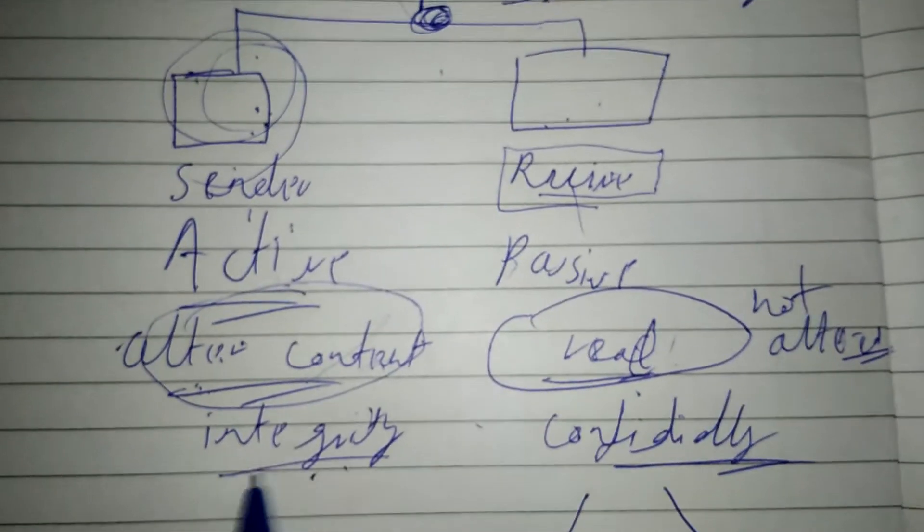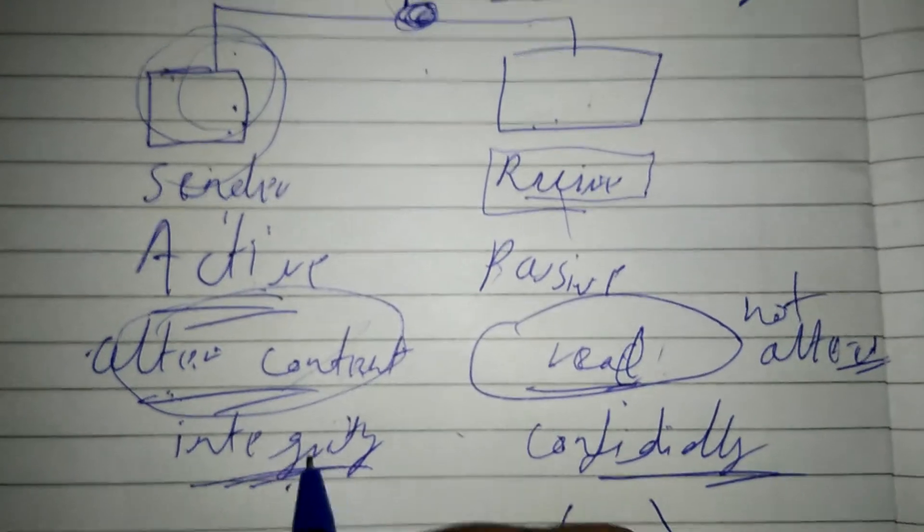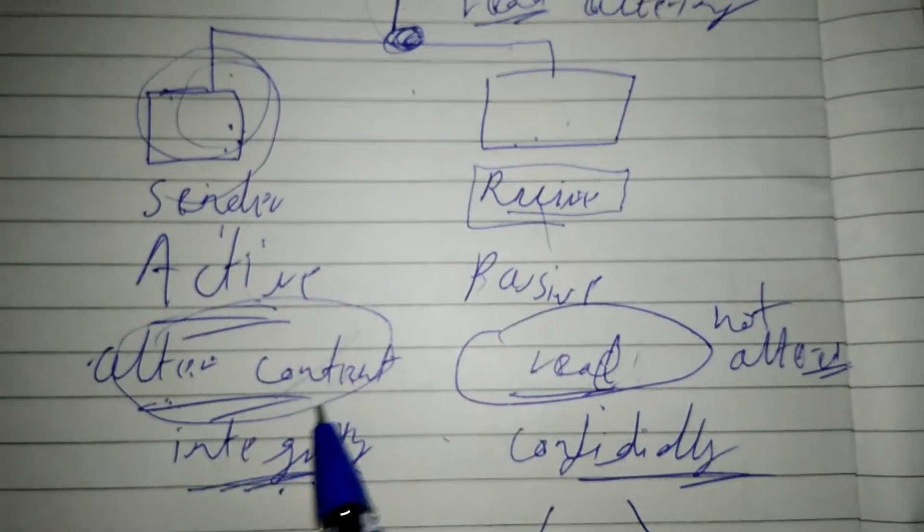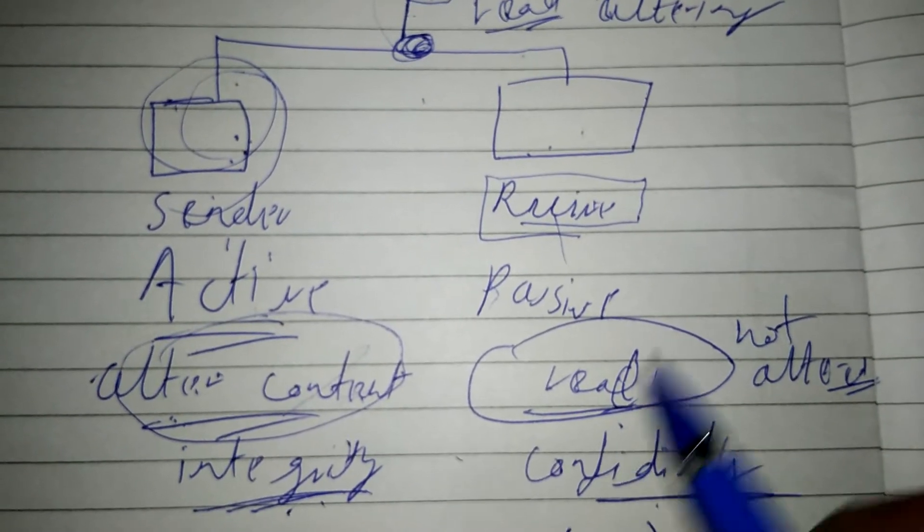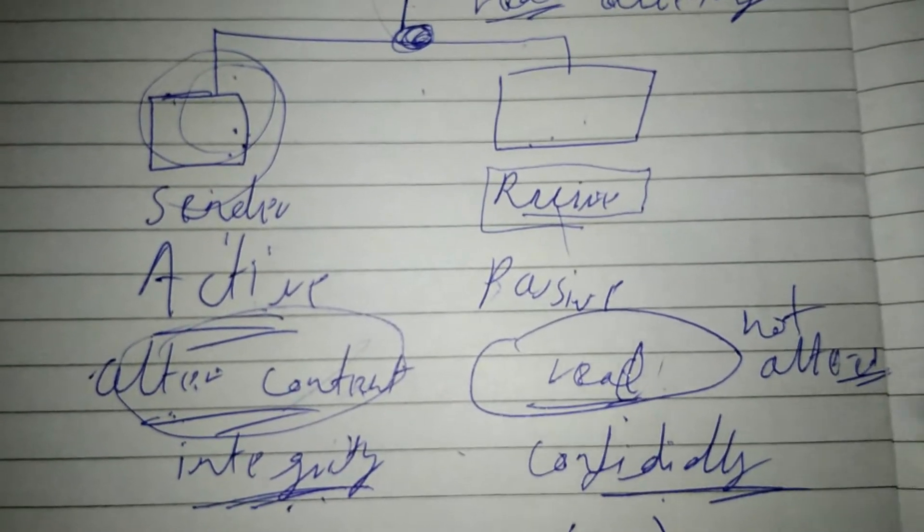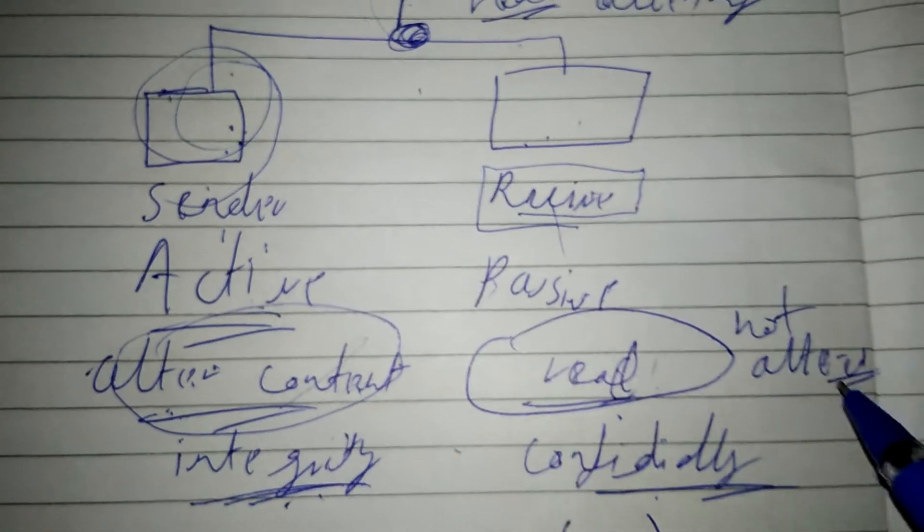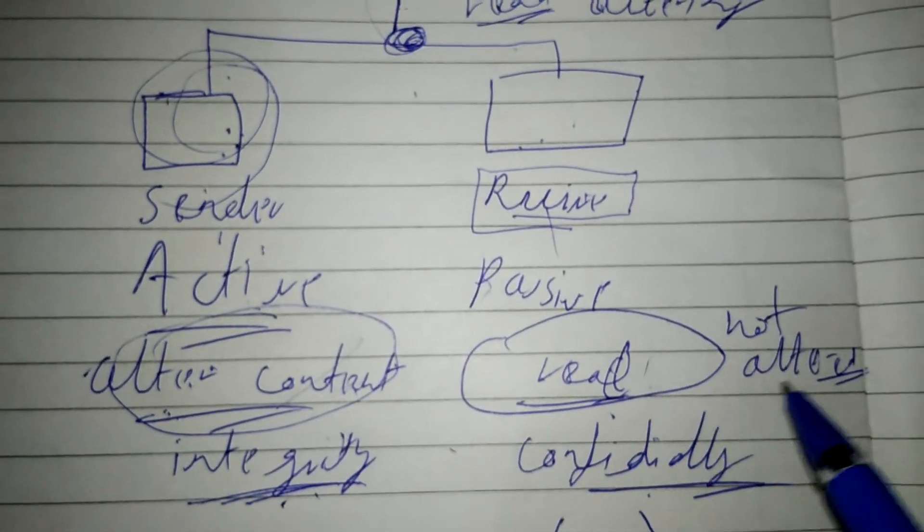Another difference is message integrity. In active attacks, whatever has been sent is not actually received by the receiver. But in passive attacks, whatever has been sent will be accurately received. However, confidentiality is compromised.